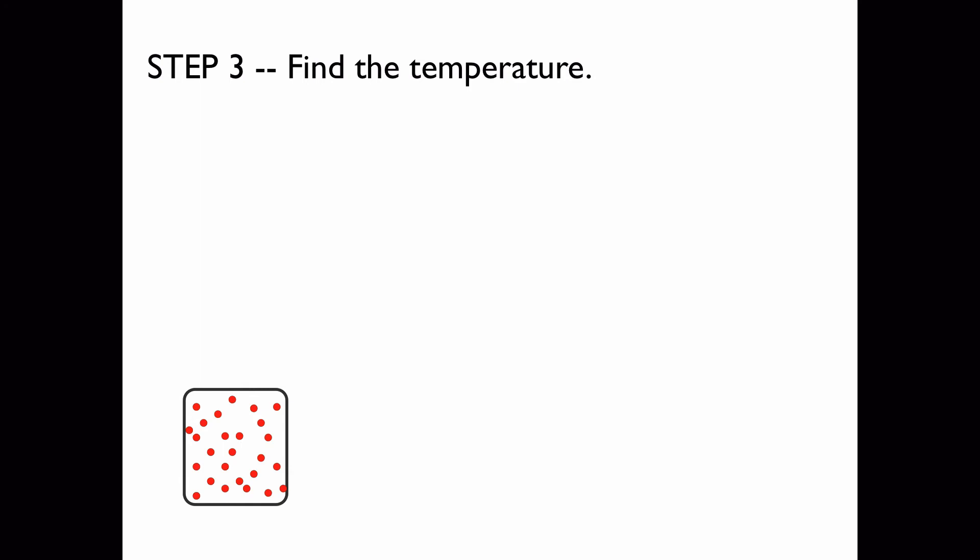Now to find the temperature we simply apply the ideal gas law. We can rearrange this to solve for the temperature. We'll plug in the quantities that we found on the previous slide plus the value of 8.31 for R, the gas constant. When we do this we get a temperature of 246 Kelvin.